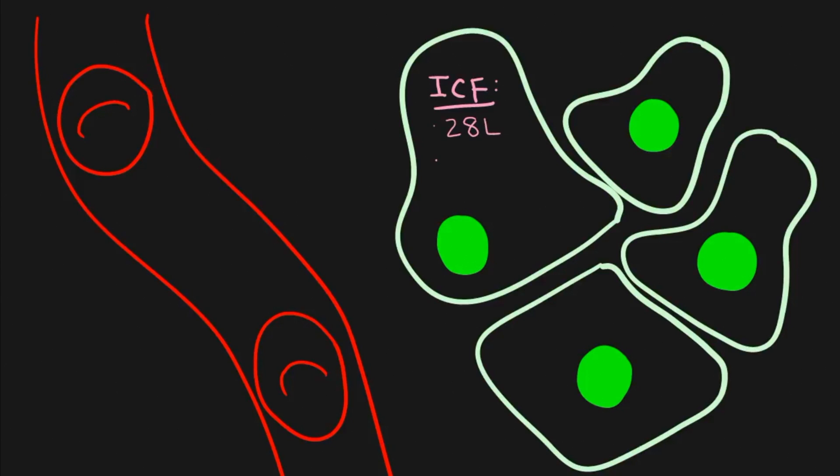If you were to take all of the fluid in all of the cells and add it up, it would be 28 liters worth of fluid. That's a lot. The main solutes in this solution tend to be things like potassium and a variety of different proteins. So when you think of the solution on the inside of yourself, think of potassium.